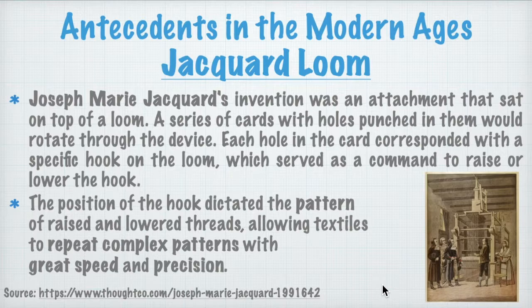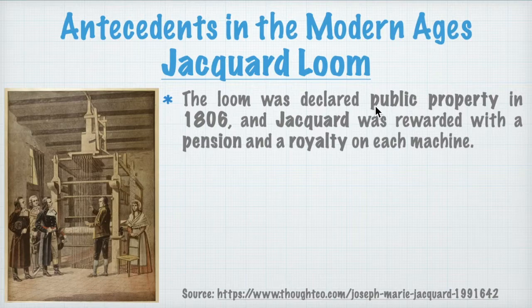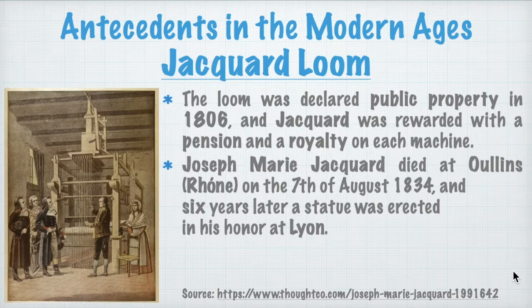This had a lot of issues in that many people were against it, because it would reduce manpower — instead of humans doing the work, the loom itself would do it. There was an issue about labor. Nonetheless, the loom was declared public property in 1806, and Jacquard was rewarded with a pension and a royalty on each machine. He died on August 7, 1834, and six years later a statue was erected in his honor at Lyon, France.